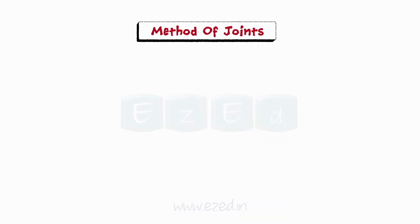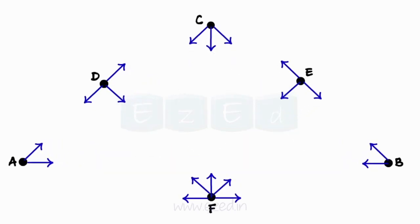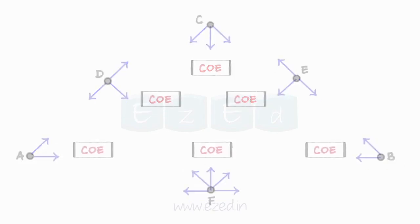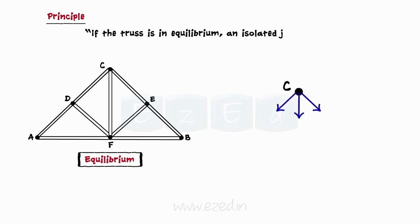Method of joints. As the name suggests, in this method, we will isolate the joints from the parent truss and then apply conditions of equilibrium to the individual joints. The principle, if the truss is in equilibrium, an isolated joint of the truss will also be in equilibrium, is used in this method.